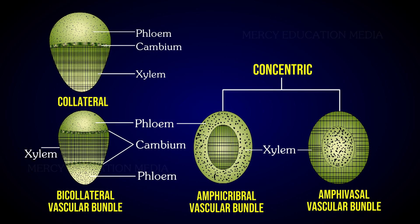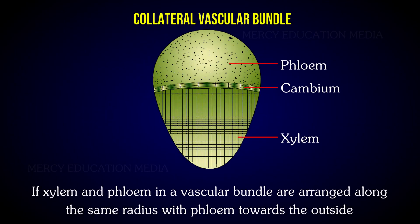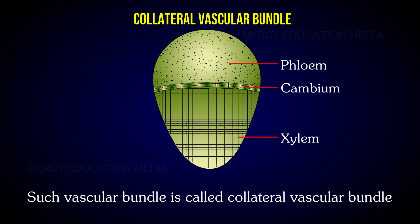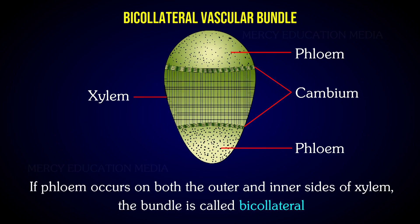Depending upon the mutual relationship of xylem and phloem, conjoint vascular bundles are divided into three types: collateral, bicollateral, and concentric. If xylem and phloem in a vascular bundle are arranged along the same radius with phloem towards the outside, such a vascular bundle is called a collateral vascular bundle. If phloem occurs on both the outer and inner sides of xylem, the bundle is called bicollateral.